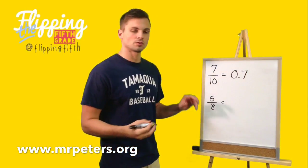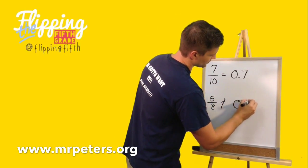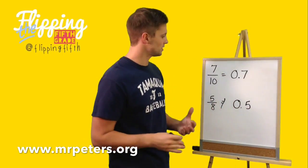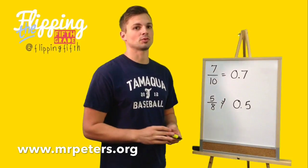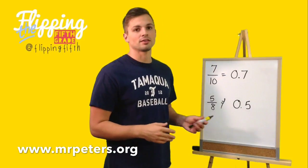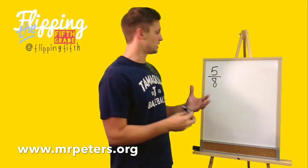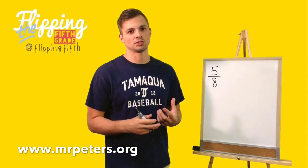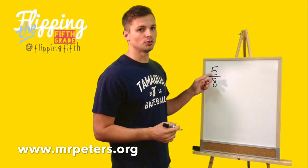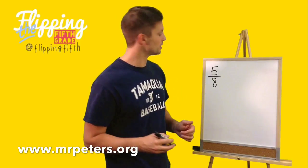The bottom one does not equal 0.5, because this fraction represents 5 eighths rather than 5 tenths. So the next process I'm going to show you using long division is how you would convert 5 eighths to a decimal. Before I jump in, let's go over some terms first. This top number is called a numerator, and the bottom number is called the denominator. That's important for what we're going to do next.